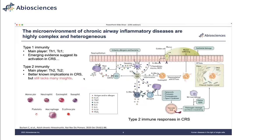The type 2 immunity process in chronic airway inflammation is very well studied, with known players including innate lymphoid cell 2 (ILC2), TH2, and eosinophils. However, its manifestations in CRS still lack a lot of insight because we haven't gone deep enough into the microenvironment. Although type 2 immunity is best studied in CRS, there is also emerging evidence suggesting the activation of type 1 immunity in CRS. No clear insight or theory has emerged yet, which gives the background for this study.